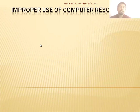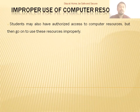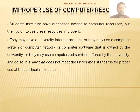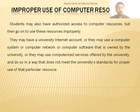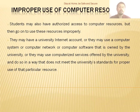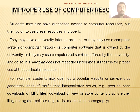The first topic for today's discussion will be improper use of computer resources. Students may have authorized access to computer resources but then go on to use those resources improperly. They may have a university internet account, or use a computer system, network, or software owned by the university, and do so in a way that does not meet the university standards for proper use. For example, a student may open up a popular website or service that generates lots of traffic that incapacitates a server.